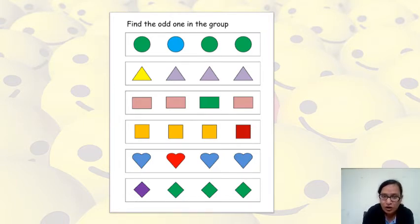You can see all the other circles are green in color, but the second one is blue in color, which is different from others. This one is different from others.